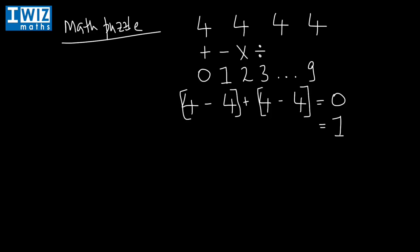Now let's try and get to one. We use four fours again. What we do is four plus four, which gives us eight, and we divide it by four plus four again. So four plus four is eight, divided by four plus four which is eight — eight divided by eight is simply one.